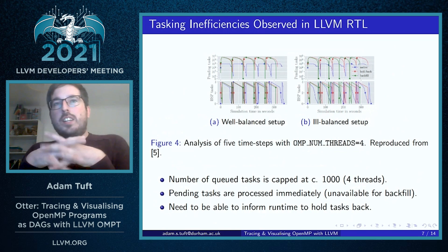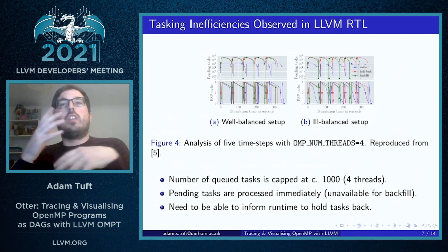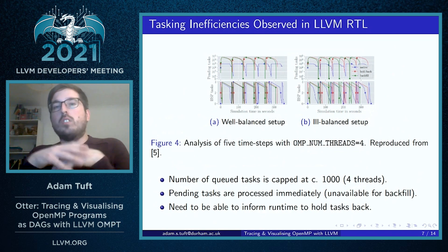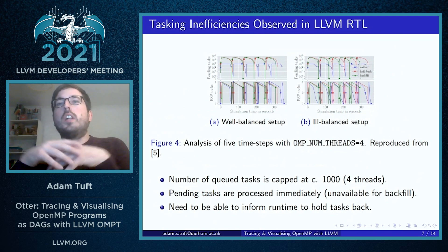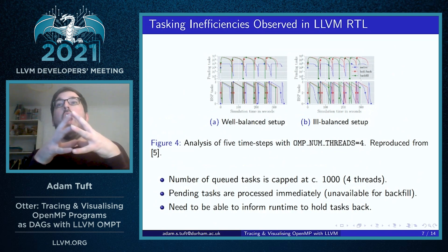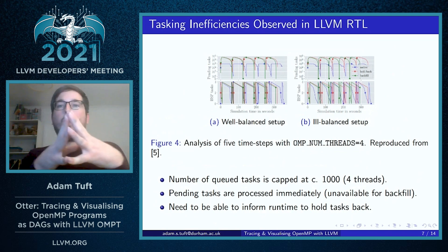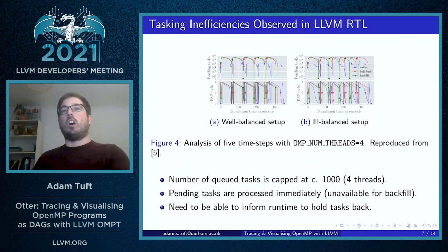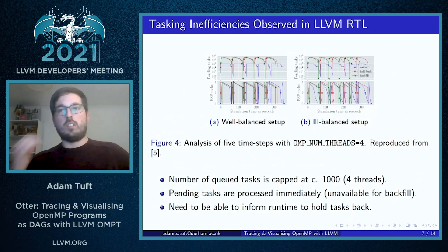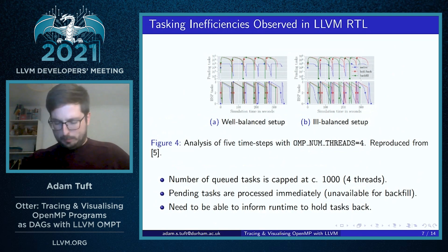This highlights an inefficiency in the LLVM runtime: it's not actually possible to tell the runtime that certain sets of tasks are on the critical path of the program, and that other tasks — while created and ready — are not on the critical path and could be left and scheduled at a later time when threads are hungry for work.